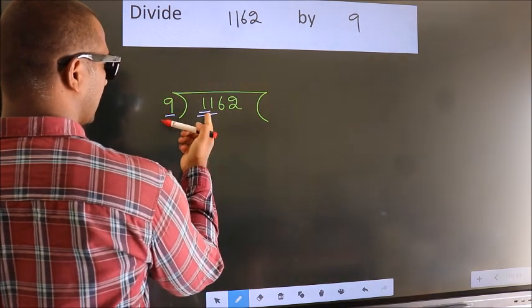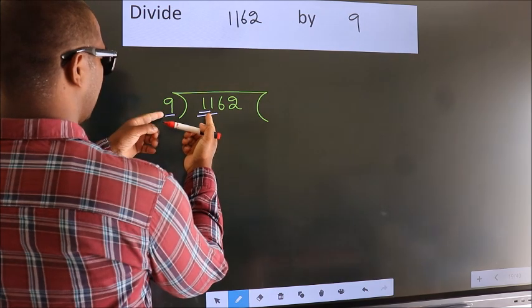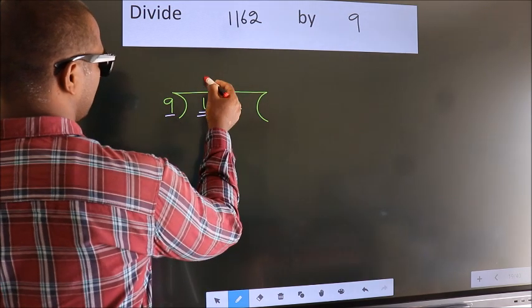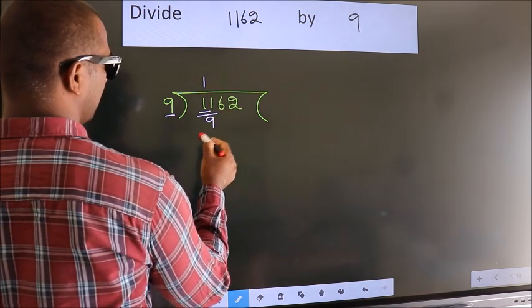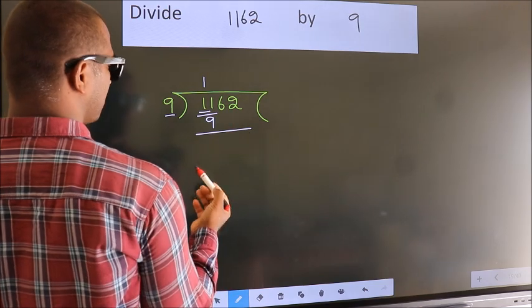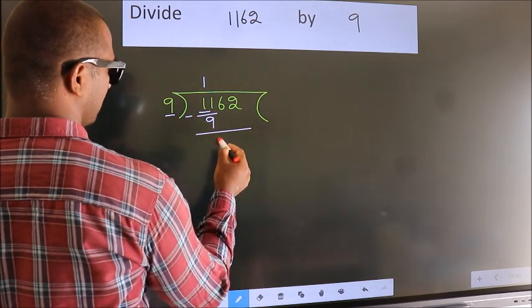A number close to 11 in the 9 table is 9 times 1 equals 9. Now we should subtract. We get 2.